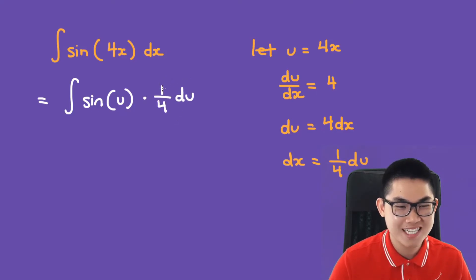And because 1 over 4 is a constant, we should move it outside of the integral. And we have 1 over 4 times the integral of sine of u du.